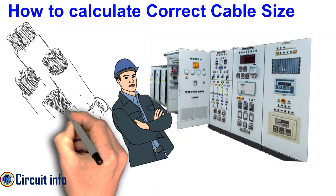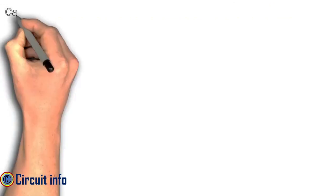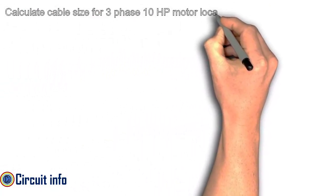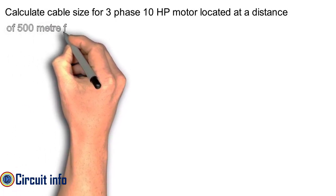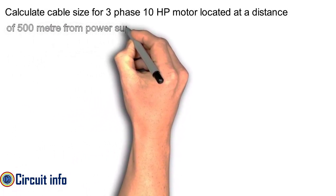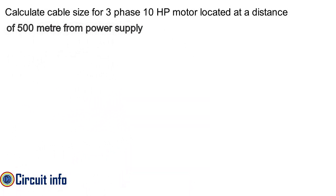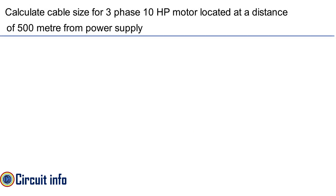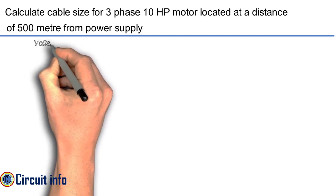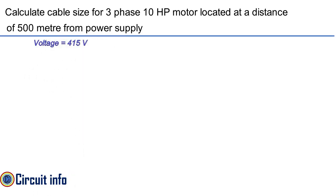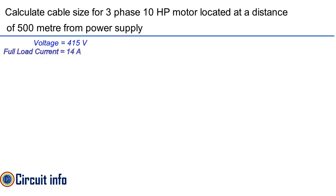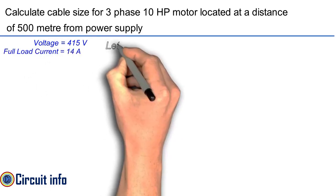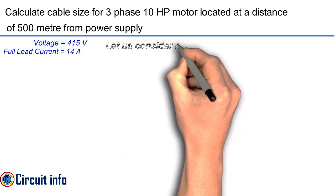We take one example: a 10HP motor located at a distance of 500 meters from the power supply. The supply voltage is 415 volt, the motor full load current is 14 ampere. Let us consider a three-core 16 square mm cable.